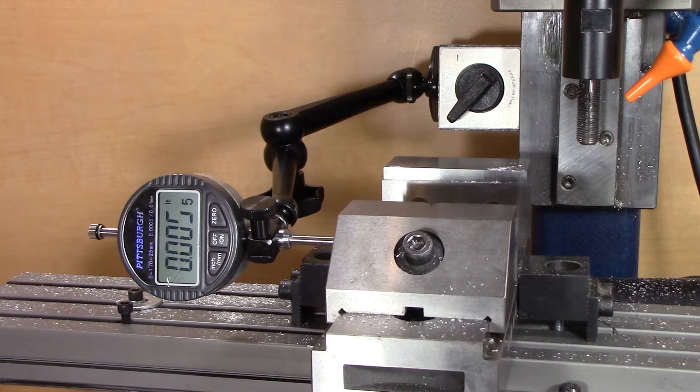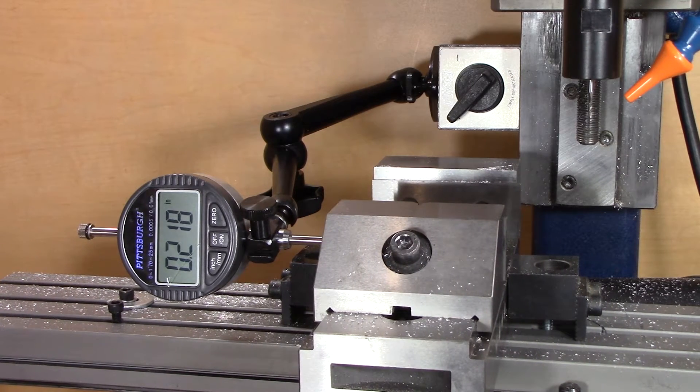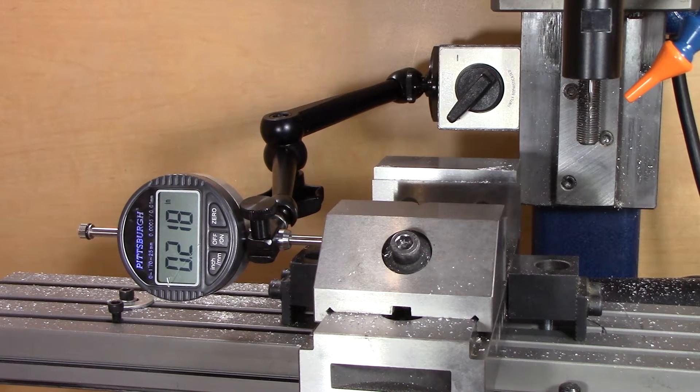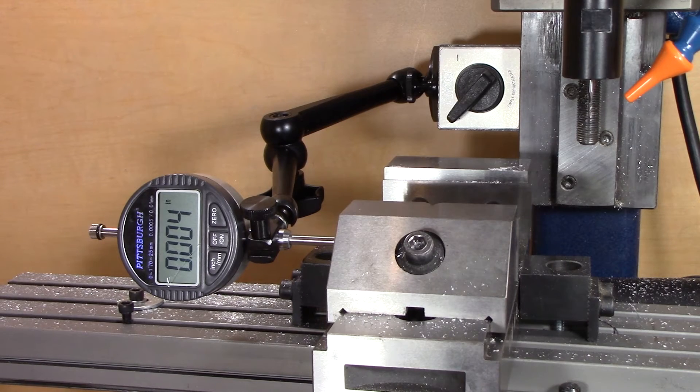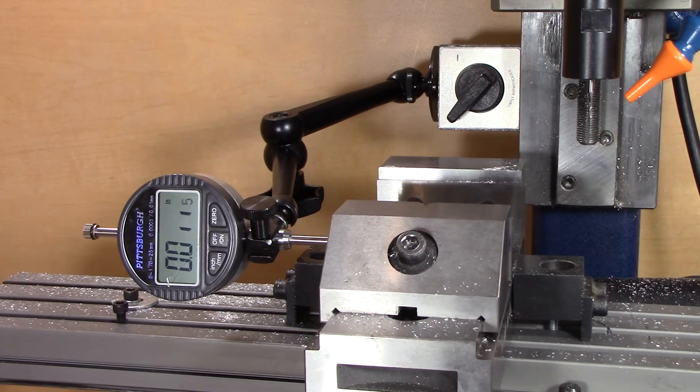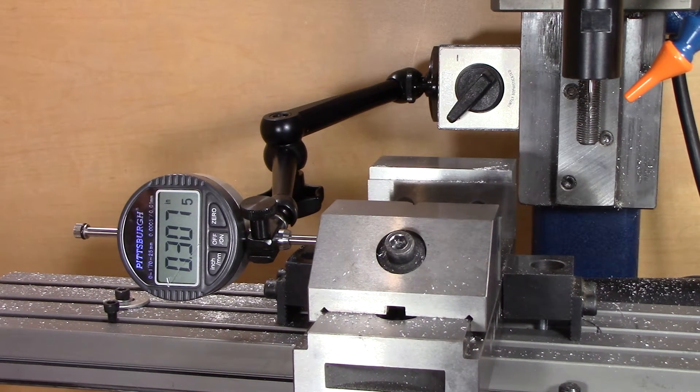Next thing I'm going to do is go to the left. When I go to the left and then come back to the right, that will give me my backlash, which you can see here is four thousandths. I'll do that again to see how repeatable that is.